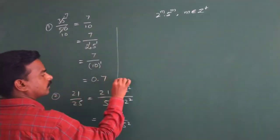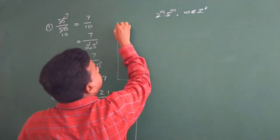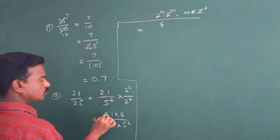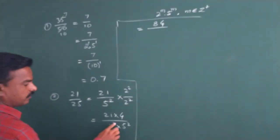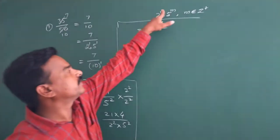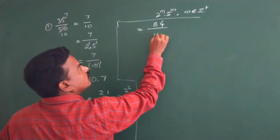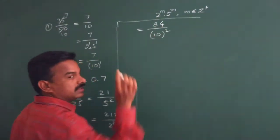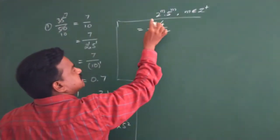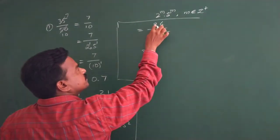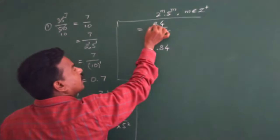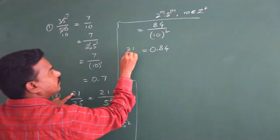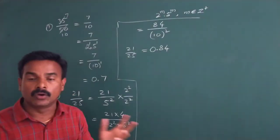We can write 2 to the power of 2 into 5 to the power of 2 as 10 to the power of 2. The power is 2, so the decimal point will be placed before 2 digits of the numerator. 21 times 4 equals 84. So 84 divided by 10 to the power of 2 means the decimal point goes before 2 digits, giving us 0.84. Therefore 21 by 25 equals 0.84.